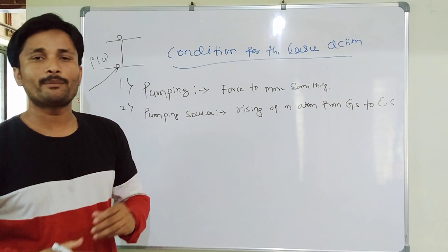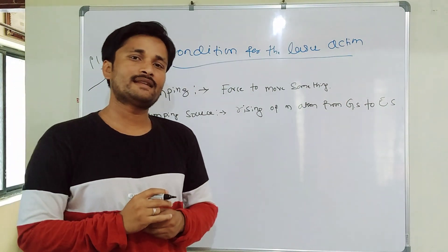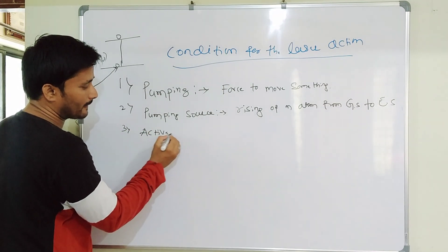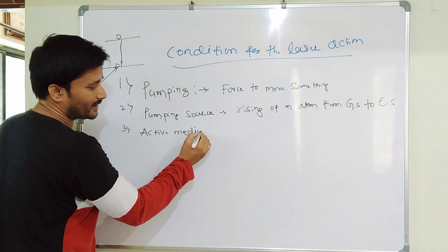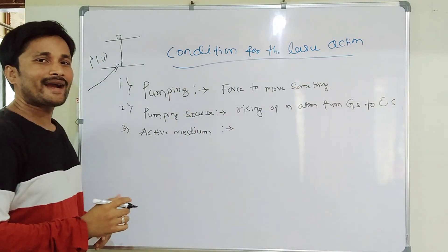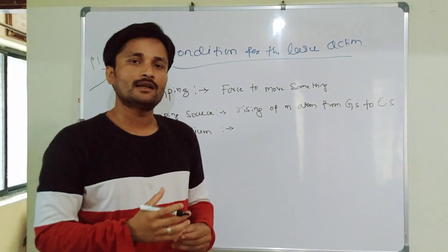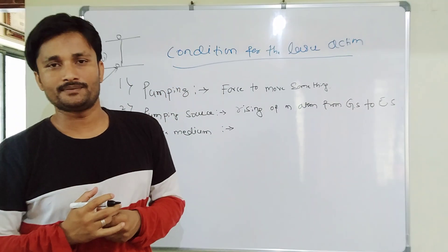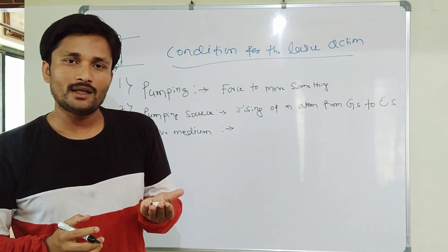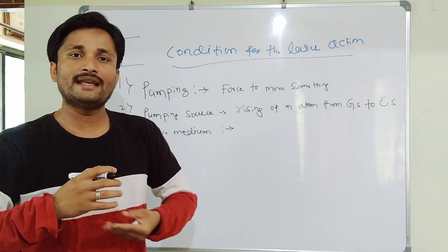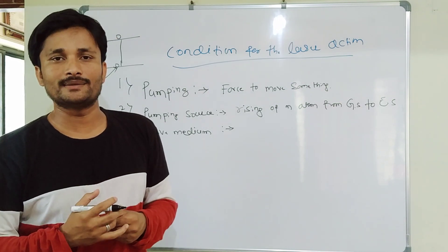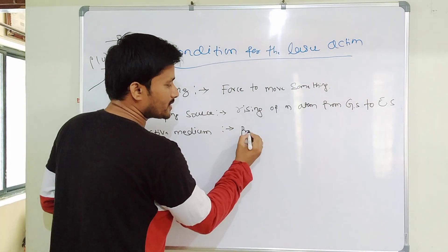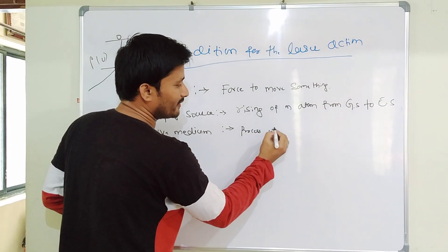The third important necessary condition is active medium. Active medium is nothing but the main important thing where all the laser process is going to begin. So active medium is the place where the process of laser begins — that is called active medium.